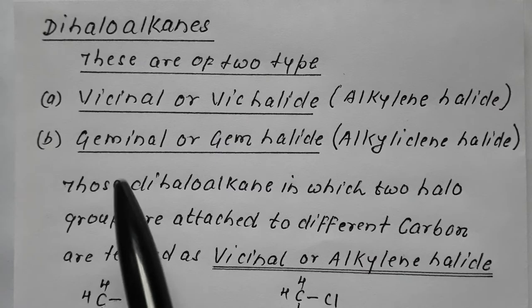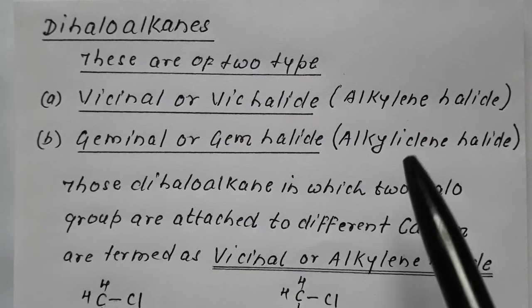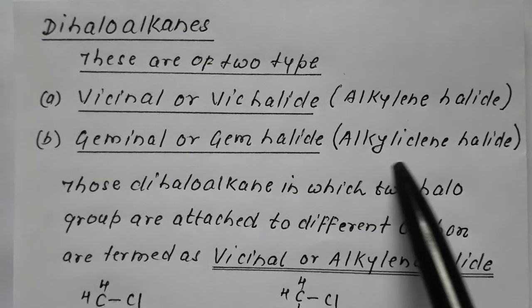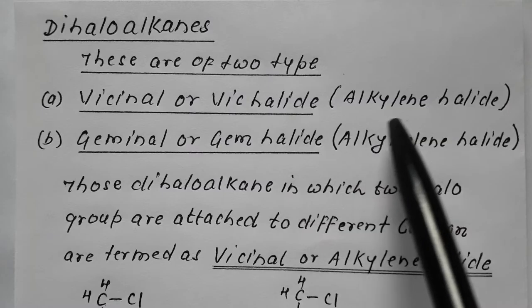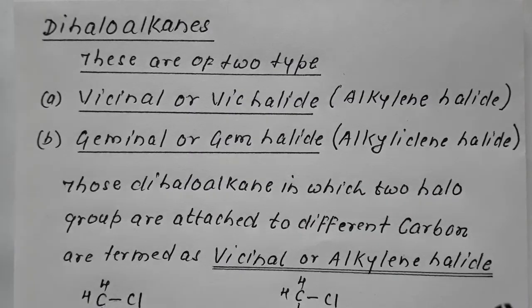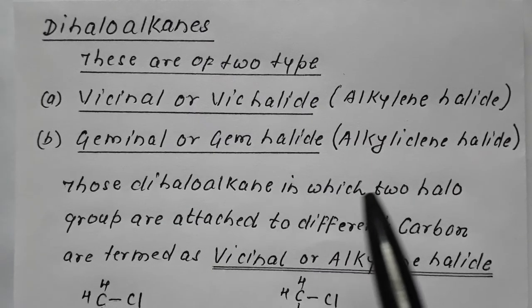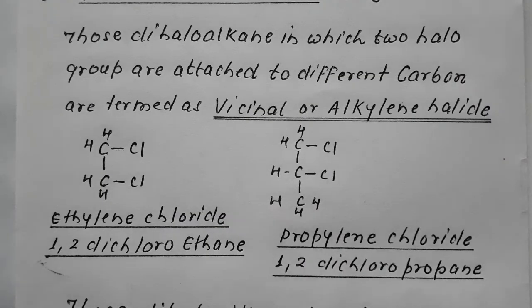Vicinal or vic-halide are also termed as alkylene halide — like ethylene halide, propylene halide, butylene halide, etc. Geminal or gem-halide are termed as alkylidene halide — like ethylidene halide, propylidene halide, etc.